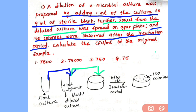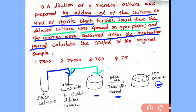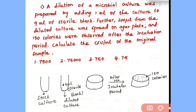After spreading the diluted culture onto the agar plate and keeping it for the incubation period, 150 colonies were observed. Now we have to calculate the CFU per ml of the original sample. The options are 7500, 75000, 750, and 75.